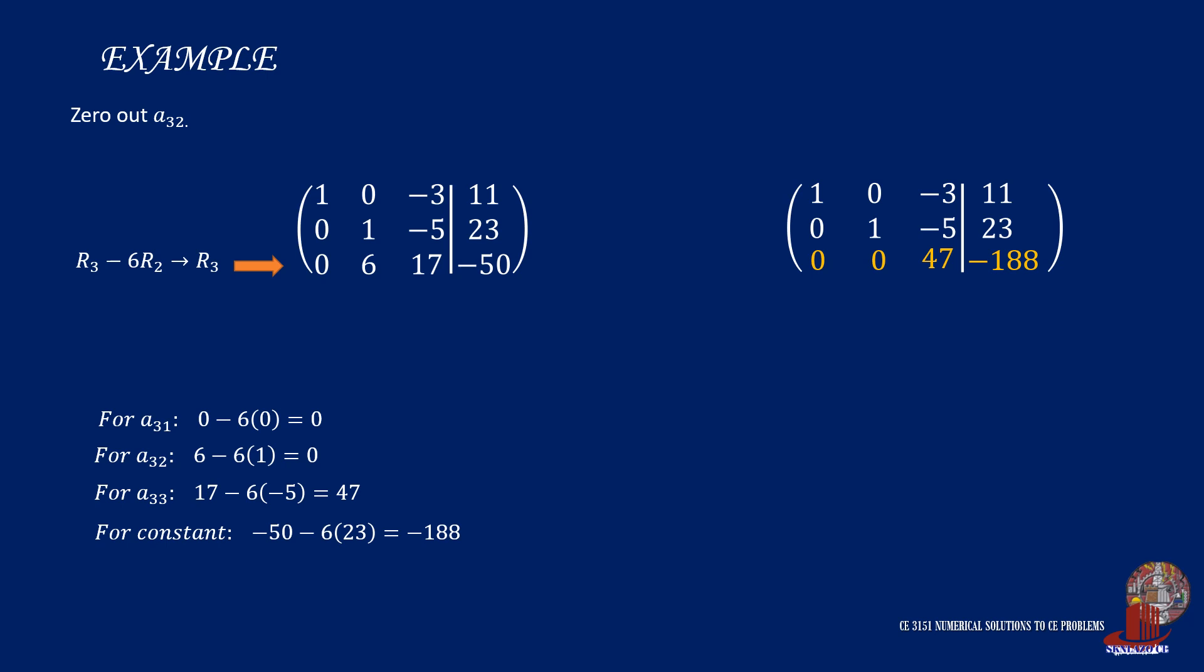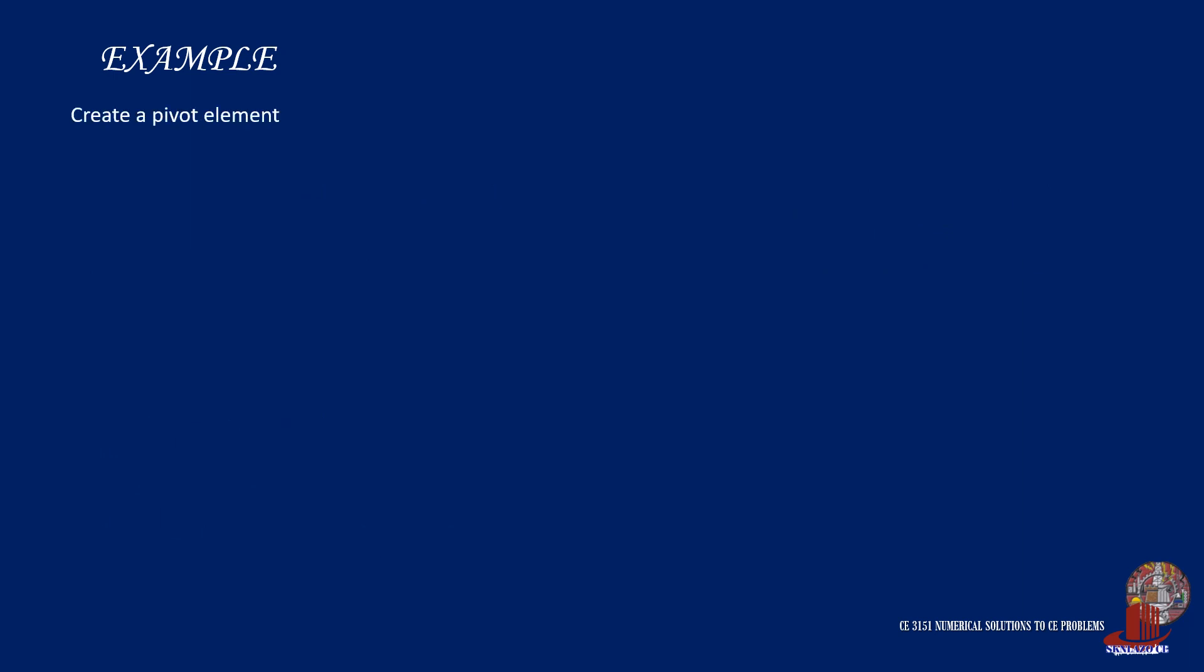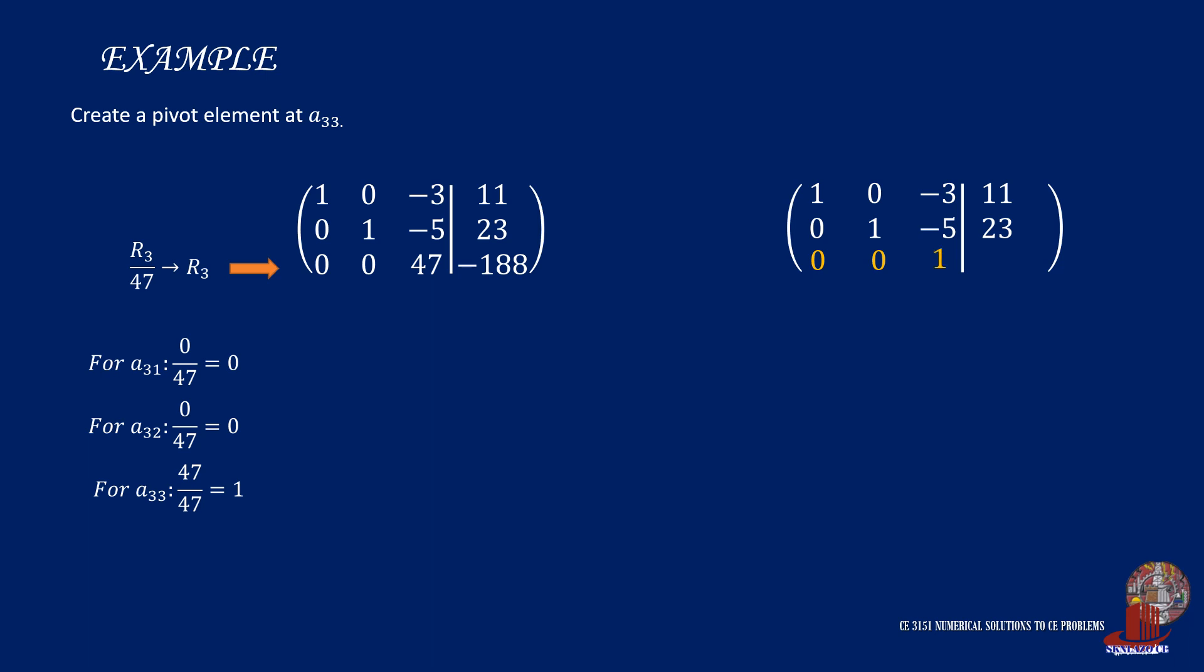Now column 2 is complete. Moving to the last column, we create a pivot element for the last row, and we place the pivot element at element 3,3. To reduce the pivot element to 1, we divide row 3 by 47. So at element 3,1, we compute 0 divided by 47 to get 0. Element 3,2 is similar with 0 divided by 47, again to give 0. Then, for element 3,3, we have 47 divided by 47, and that is 1. And the constant element has negative 188, which we divide by 47 to get negative 4.